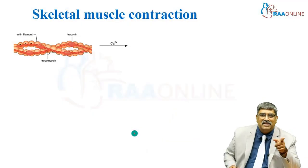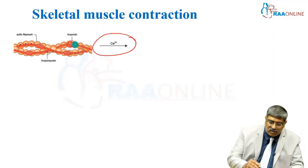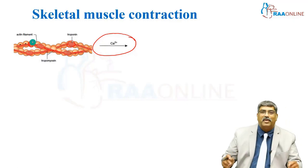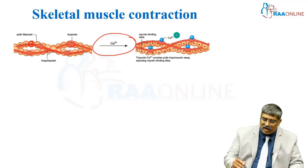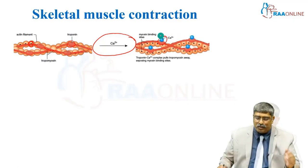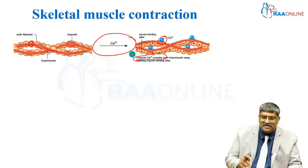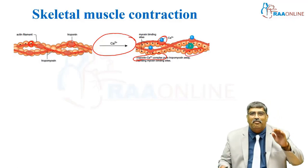Now, how does calcium induce muscle contraction? Troponin is present, and tropomyosin covers the myosin binding site on the actin. When calcium is released, it binds with troponin, and this troponin-calcium complex causes a conformational change in tropomyosin, exposing the myosin binding sites.